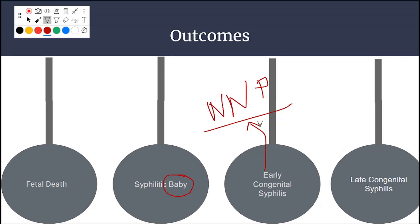The fourth outcome is a baby born with normal physiology but carrying Treponema pallidum — this baby either remains well or develops congenital syphilis or stigmata later in life. So the four outcomes are: fetal death, syphilitic baby, early congenital syphilis, and late congenital syphilis.